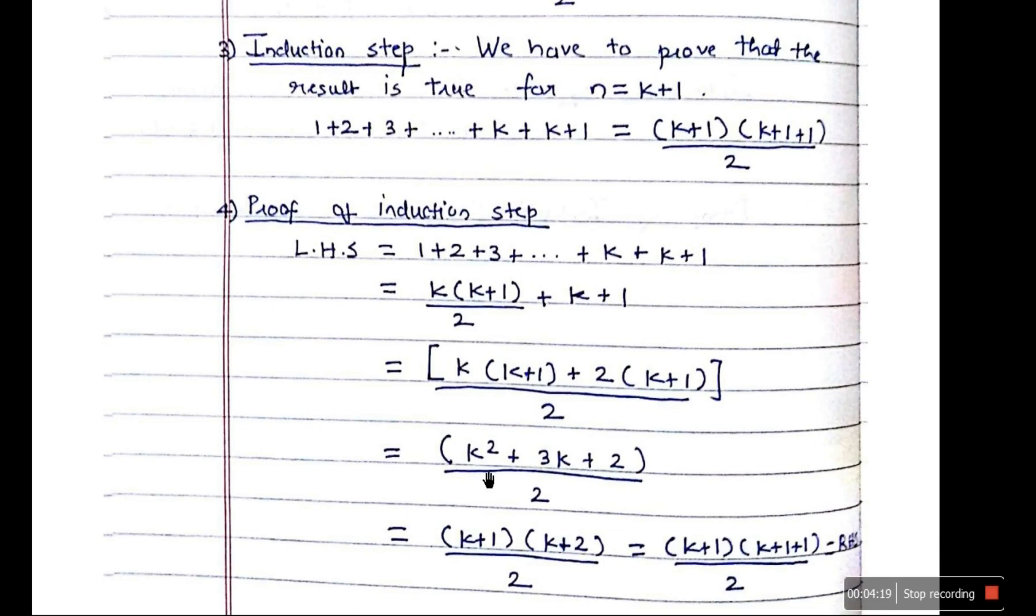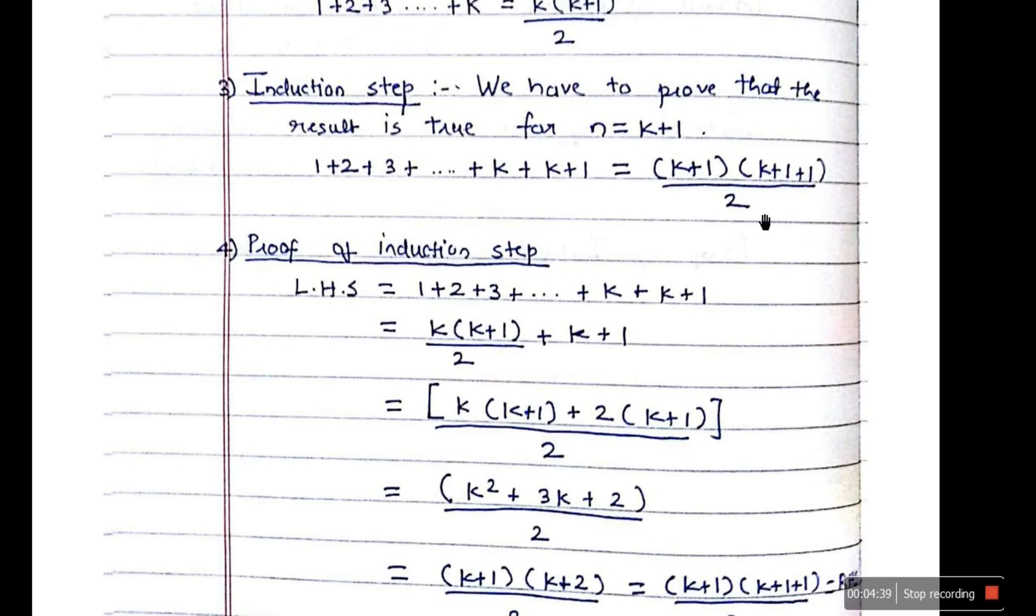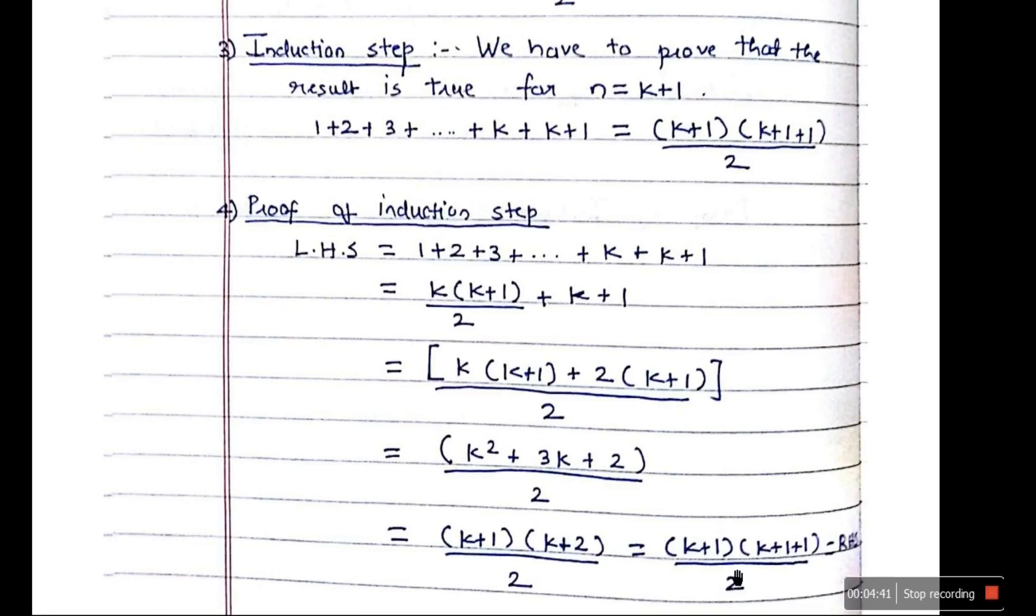We get the quadratic equation k square plus 3k plus 2, whole divided by 2. This can be simplified as k plus 1 into k plus 2, whole divided by 2. k plus 2 can also be written as k plus 1 plus 1. So hence we get our RHS, which was this: k plus 1 into k plus 1 plus 1 divided by 2. So we have proved that LHS equal to RHS. So that is how we do it.